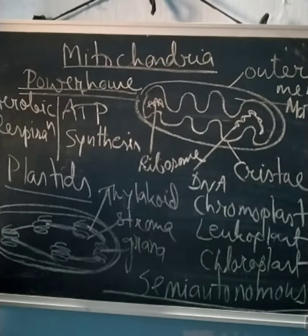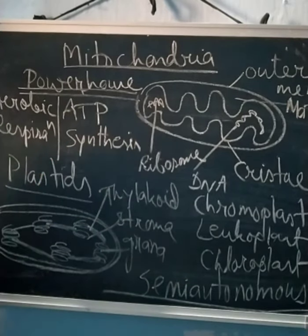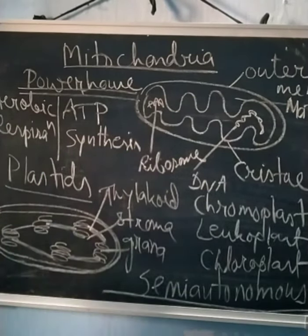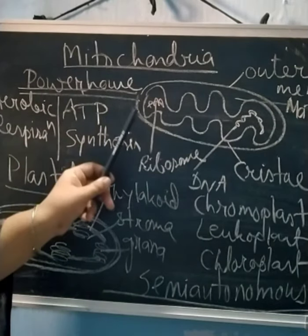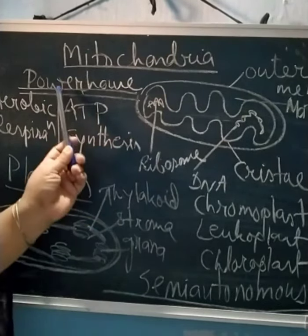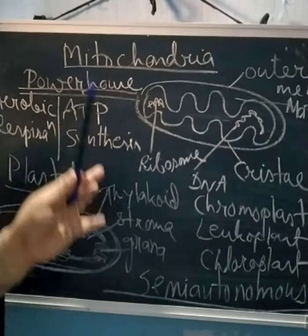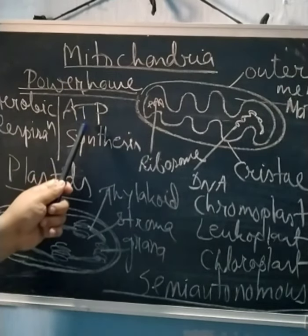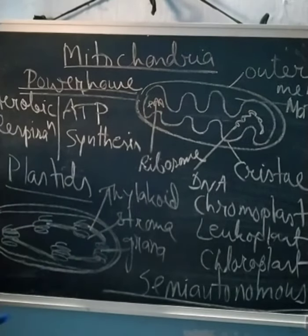Mitochondria is a cell organelle present inside the cell and is very essential. Every cell needs energy, and that energy is stored in every cell via the mitochondria, which produces it. That is why mitochondria is called the powerhouse of the cell — it produces energy in the form of ATP, adenosine triphosphate.